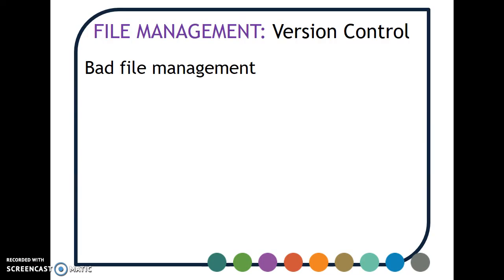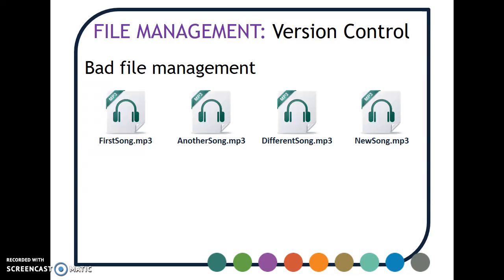Here's an example of really bad file management. You can see these are audio files — the first one is 'first song', then 'another song', 'different song', 'new song'. How do we know which one was the first version and which one was the last version? It might be that the client gives you feedback after the first version and the target audience gives you feedback as well. The second version you've incorporated that feedback, but then when you get to the second one, they say, 'Actually, I liked something from version one.' So you need to be able to track those changes because you might need to reverse them.